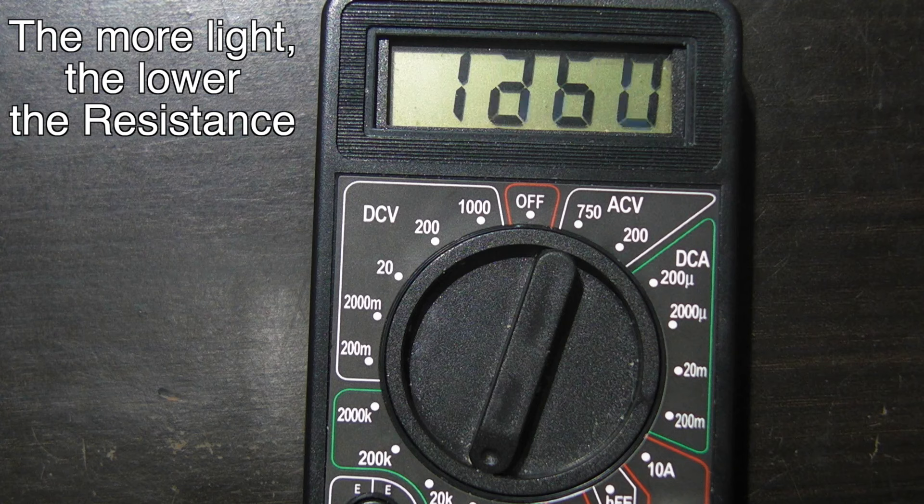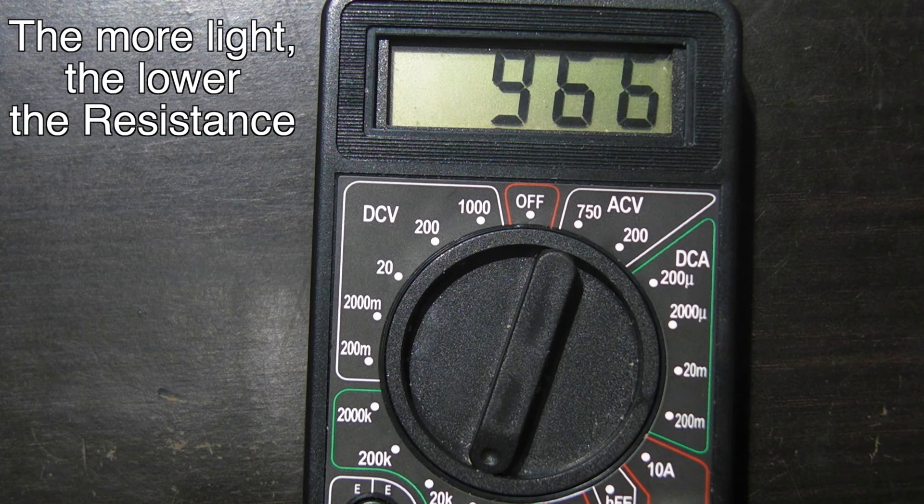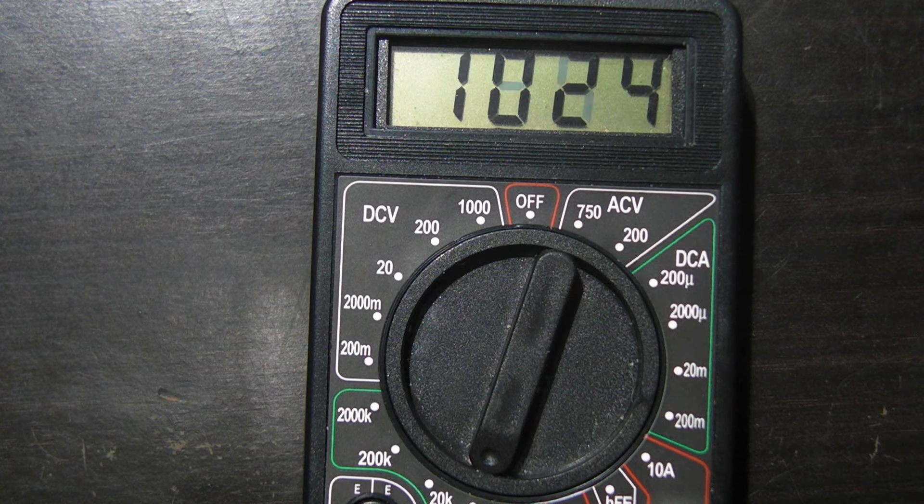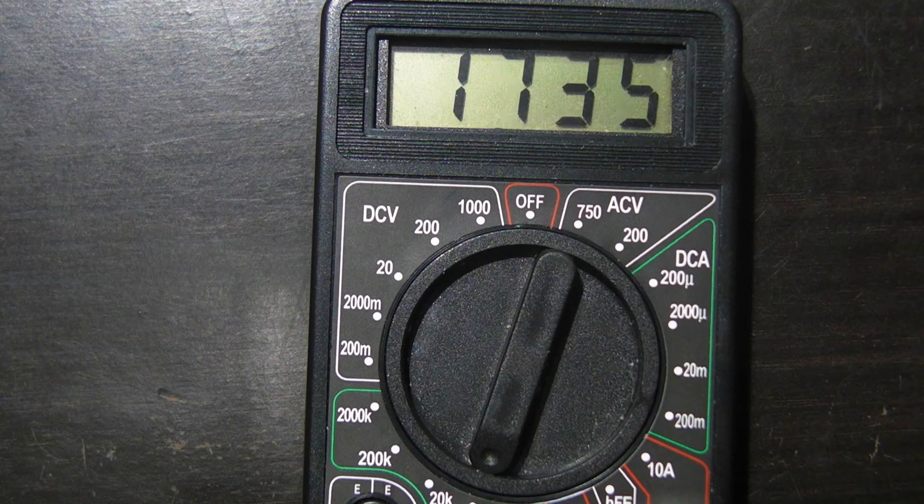As I move the light-dependent resistor closer and closer to the light source, you can see that the resistance drops. And as I pull it away from the light source, the resistance starts to increase again.